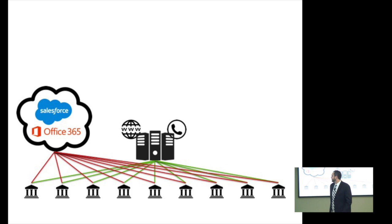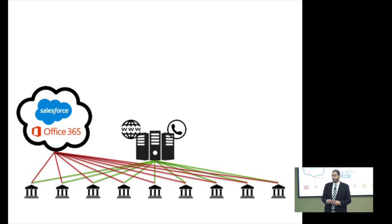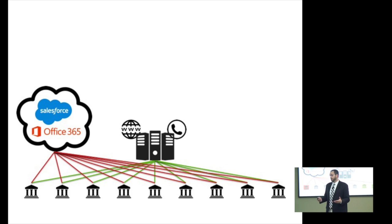Unfortunately, those services don't always work so well. They may be performing slowly on a given day — so slowly that they're essentially down, or they may actually just be down. They may not be able to access the website; it may be timing out. They may be able to place a VoIP call but not be able to hear the person on the other side. Either way, when there are problems with the services that each of your locations depend upon, they can't do their job and business grinds to a halt.